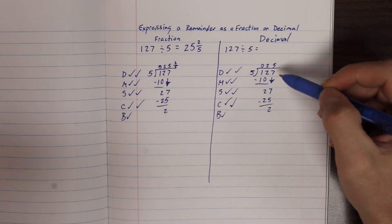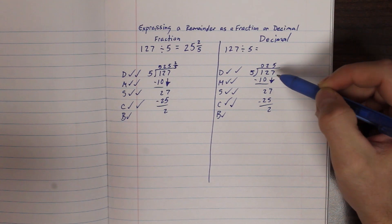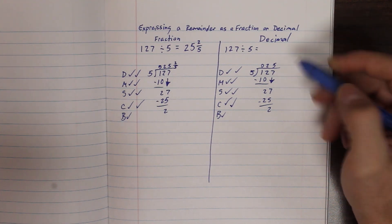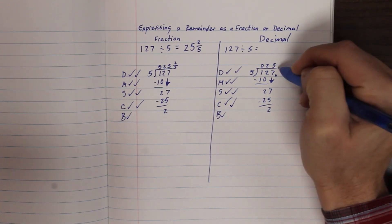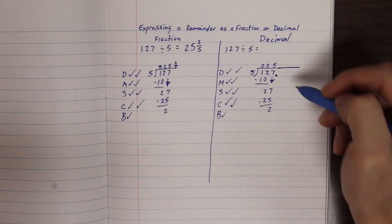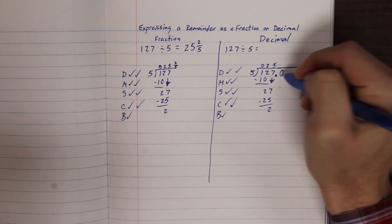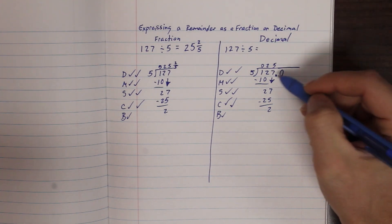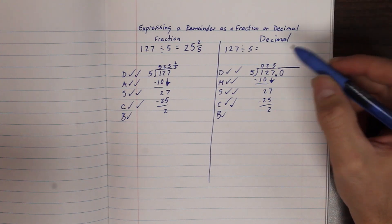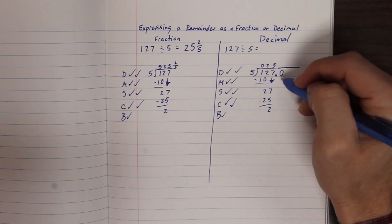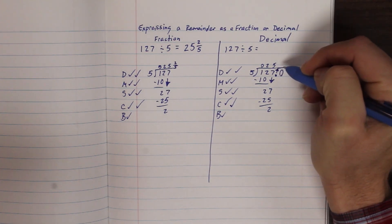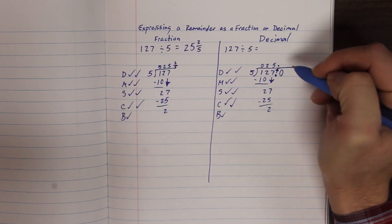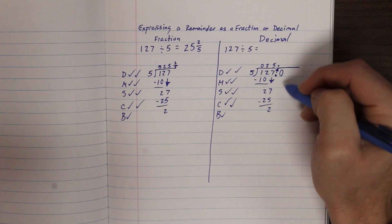This is where we diverge from writing a fraction remainder. What always comes to the right of a whole number — what imaginary thing is always there even if you don't see it? A decimal! There is always a decimal there. And what can we always add that doesn't change the value? A zero! It doesn't change the value of 127 at all. So we add a decimal and a zero — value doesn't change — but now we have something to bring down. Most importantly, we need to bring the decimal to the top: like never never stop, bring the decimal to the top!